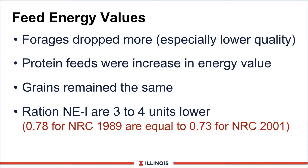What about the general energy values of feeds? As a guideline, forages dropped a bit more than other feedstuffs, especially the lower quality forages. The protein values were increased in energy value compared to the old NRC, and grains remained about the same. But here's an important take-home point: if you are calculating net energy value of lactations and diets, generally the new NRC is going to be 3 or 4 units lower compared to the old NRC. Therefore, an old NRC value of 0.78 is comparable to 0.73. So you've got to be sure you're not mixing and matching NRCs because you're going to get different values and different interpretations.